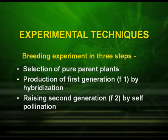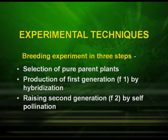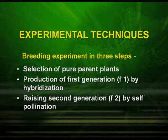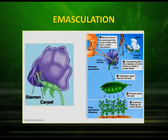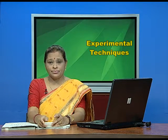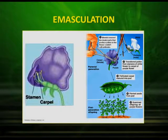Let us see what were the experimental techniques. He performed breeding experiments in three steps. The first step was the selection of pure breeding plants — whether pure for tall or pure for dwarf. The second step was production of the first generation by hybridization — the two parents were cross-pollinated to produce the F1 generation. The third step was raising the F2 generation by self-pollination. The process of removing anthers from one plant and dusting pollen grains from another plant onto the stigma is called emasculation.